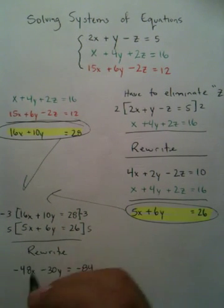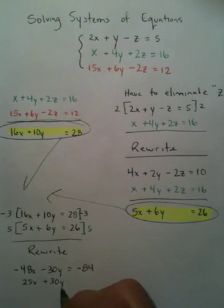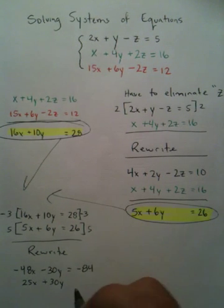Down below, 5 times 5, 25x, plus 30y, and 5 times 26 is 130.